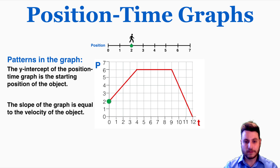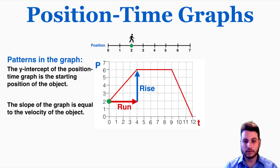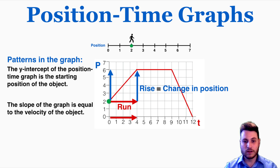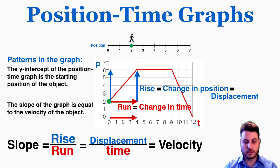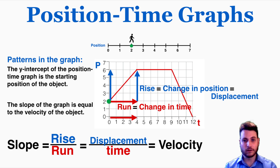The slope of the graph is equal to the velocity of the object. The reason why this is the case is because the rise is the change in position, which is the displacement, and the run is the change in time. Because slope is rise over run, we can rewrite that as the displacement over the time, which is equal to the velocity. So the slope of the position time graph is always going to be equal to the velocity.